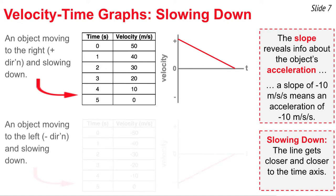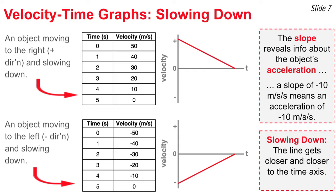For an object moving to the left and slowing down, the line appears in the negative region of the graph because it has negative velocity, but the line has a positive slope because the object has a positive acceleration. Moving in the negative direction and slowing down is equivalent to a positive acceleration. In both cases — moving right or left — slowing down motions are represented by a line getting closer and closer to the v equals zero axis over time.